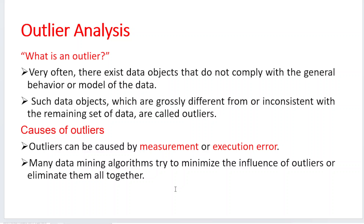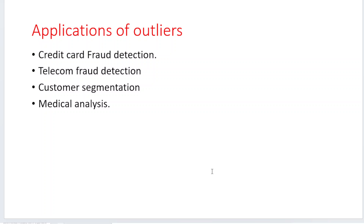What are the causes of outliers? Outliers may be caused by measurement — for example, the distance from one data point to another. Another cause is execution errors: while executing, if we get some different kinds of errors, that causes outliers. Many algorithms try to minimize the influence of outliers or completely eliminate them.